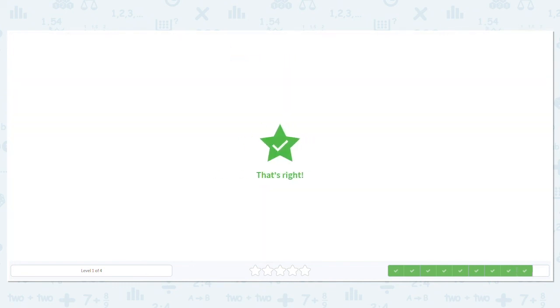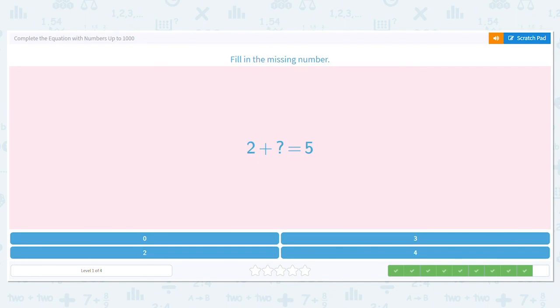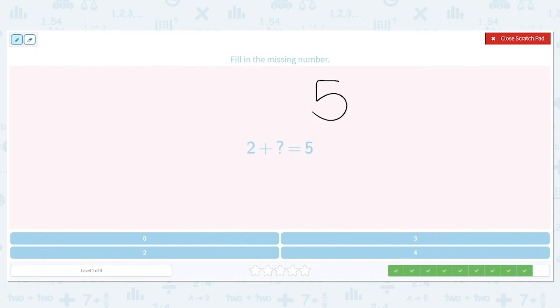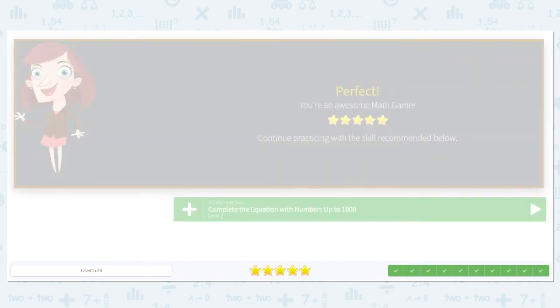Let's do one more. 2 plus blank equals 5. Use the opposite of addition. Use subtraction to solve it. So we do 5 minus 2 equals. What is 5 minus 2? It is 3. So that means 3 is our missing addend. And let's check it. Is 2 plus 3 equal to 5? Yes, it is. So 3 is our answer. Good job finding those missing numbers.